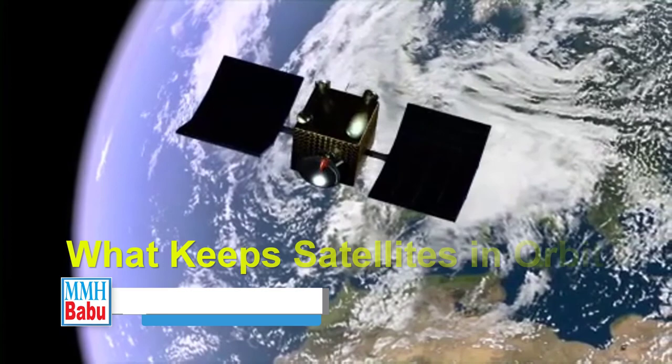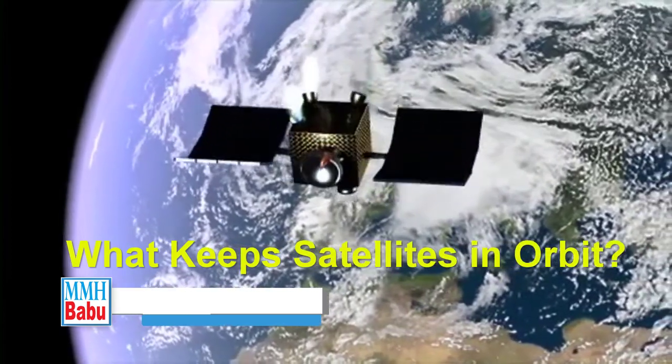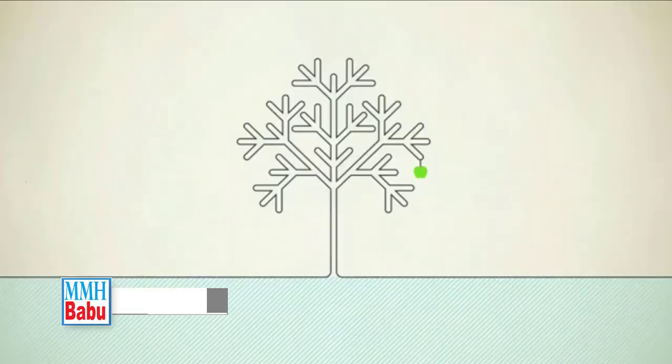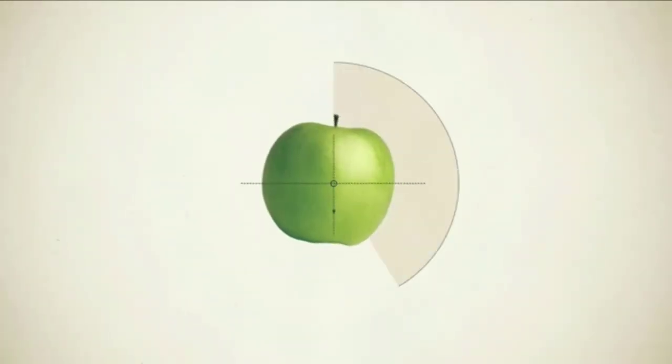How does a satellite orbit? What keeps it up there? The answer is to do with some of the ideas of gravitation first defined by Isaac Newton 400 years ago.